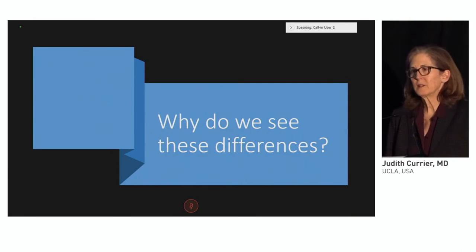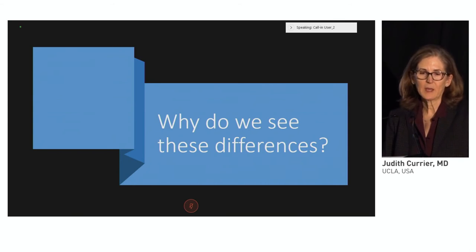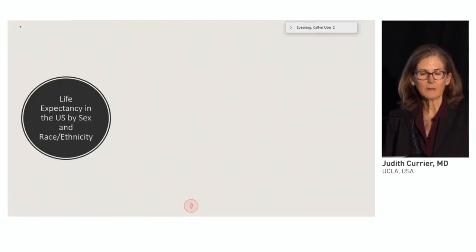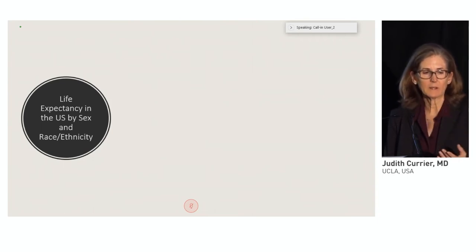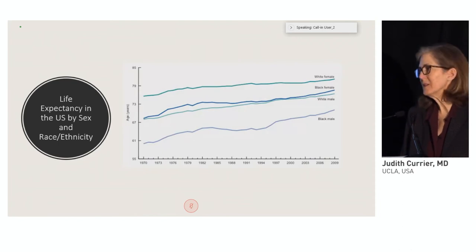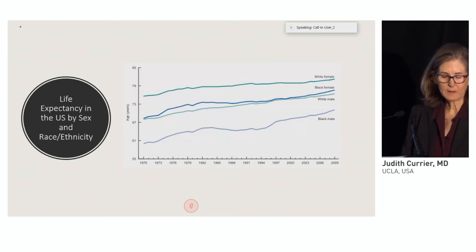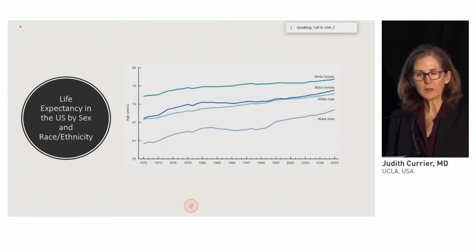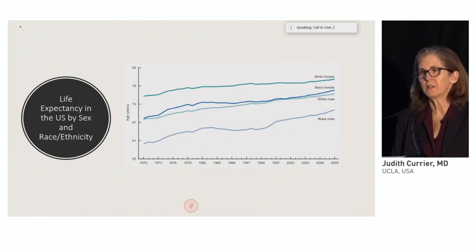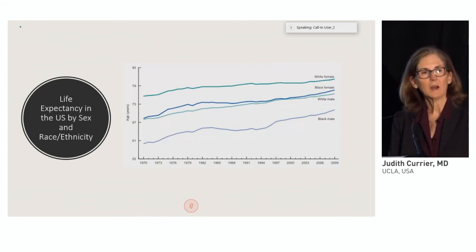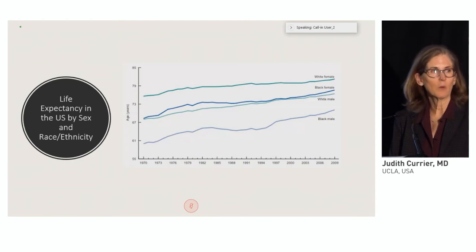Why are we seeing some of these differences? This is a really important advance in research where we need more work. Life expectancy in the U.S., looking at it by sex and ethnicity, shows women live longer than men — white women and black women compared to men. So the question is: is this survival advantage somehow mitigated for women living with HIV, and if so, what's driving that?